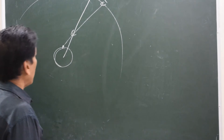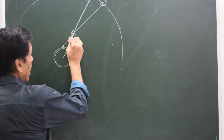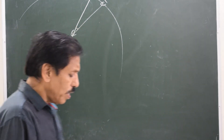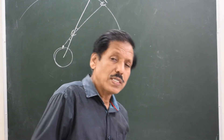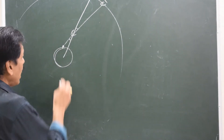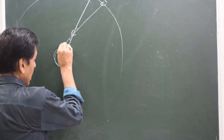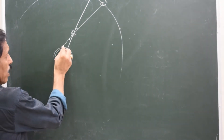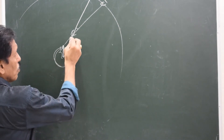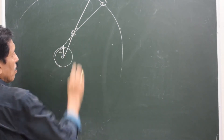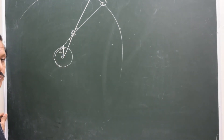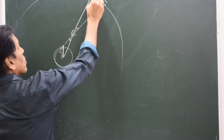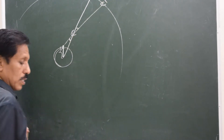This error of parallax is also represented by this angle. So what is the error of parallax? It is the angle caused by the radius of the earth through the observer at the center of the body. This is parallax.